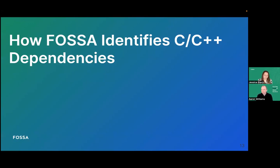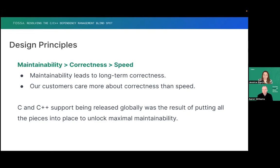So we talked about C and C++ dependencies and how we include them. Now we'll talk about how FOSA identifies them. Our design principles with our C and C++ support for FOSA are: maintainability is better than correctness, which is better than speed. We think that maintainability leads to long-term correctness, and our customers care more about correctness than speed. What you're seeing today is the result of those principles, where we're focusing on maintainability first and then correctness. This product is still in early stages, so we'll be going along those principles as we go.